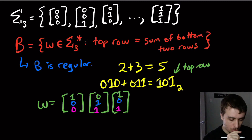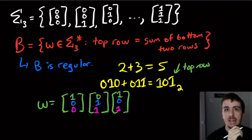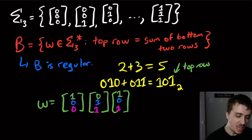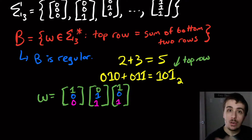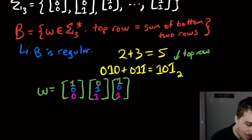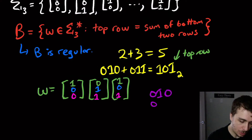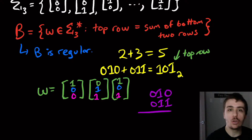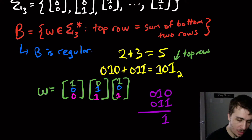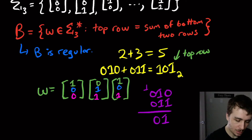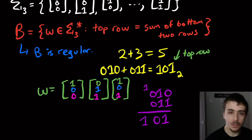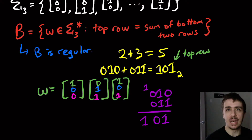What we need to show is that this language is regular, which means there's a DFA for it. The problem is that in order to add these up — if we go through grade school addition, we start at the rightmost bit and add it up. DFAs work from left to right, whereas real addition works from right to left, and that seems like a problem.